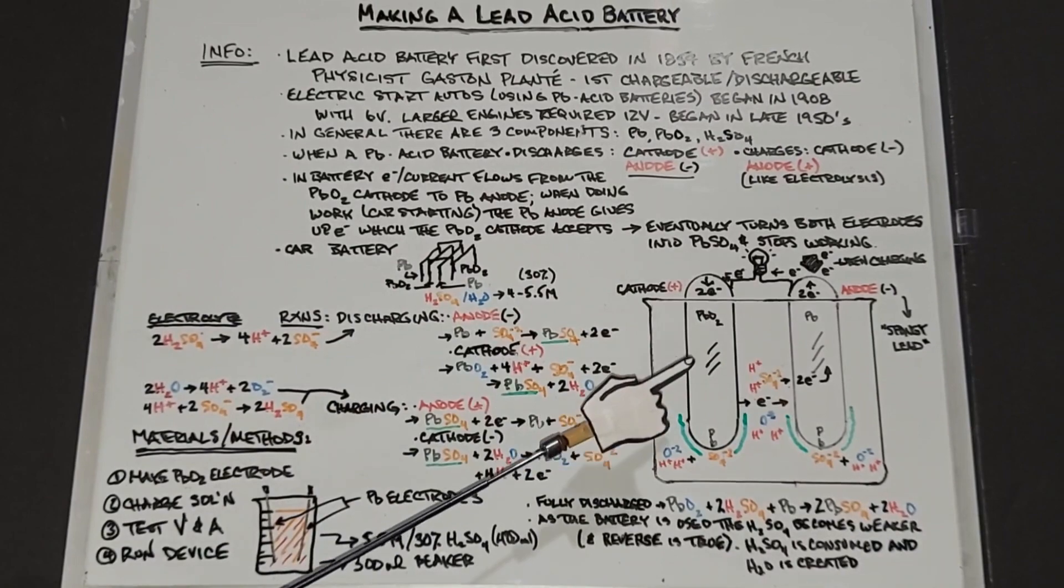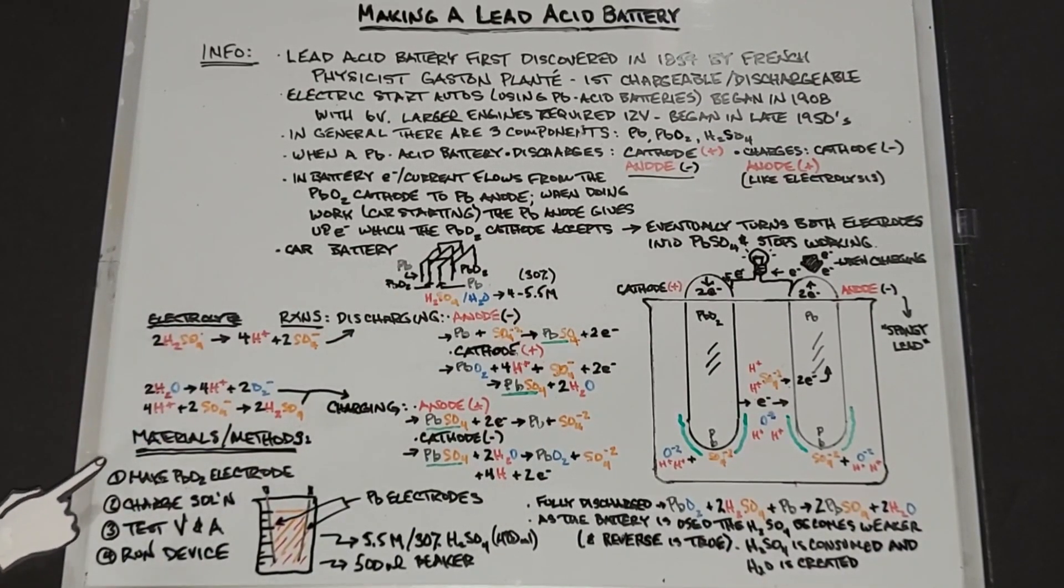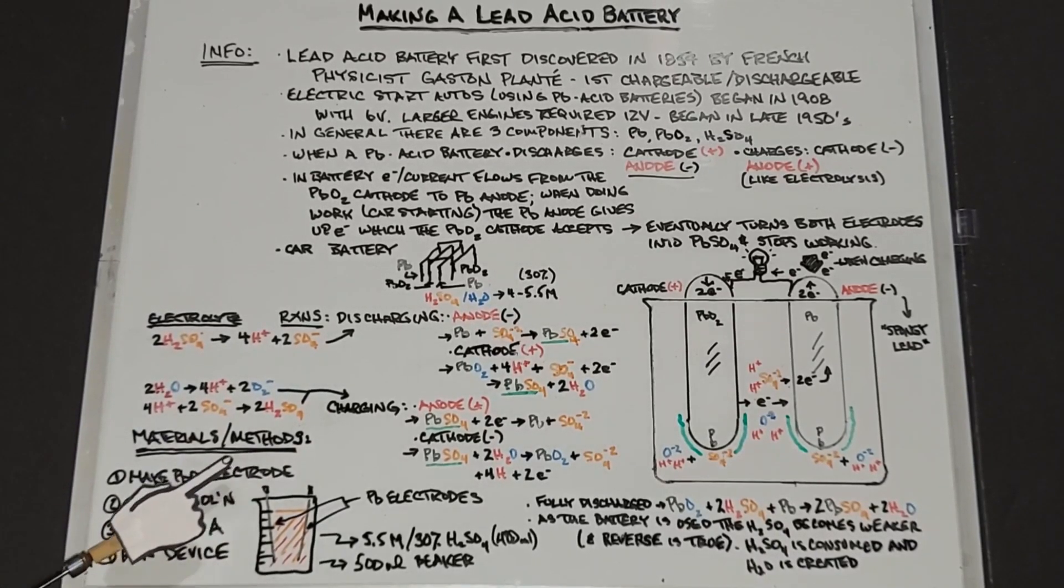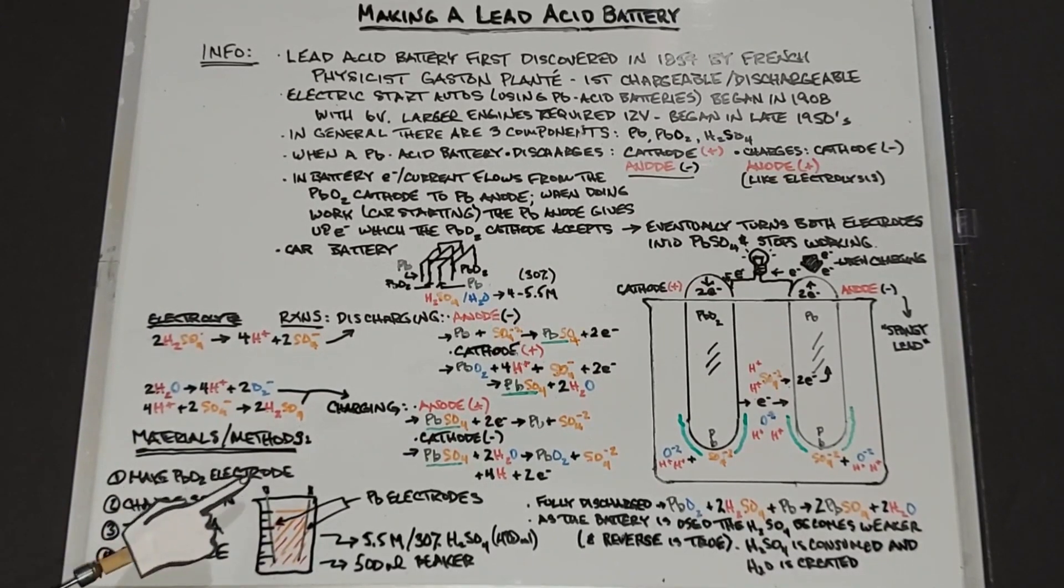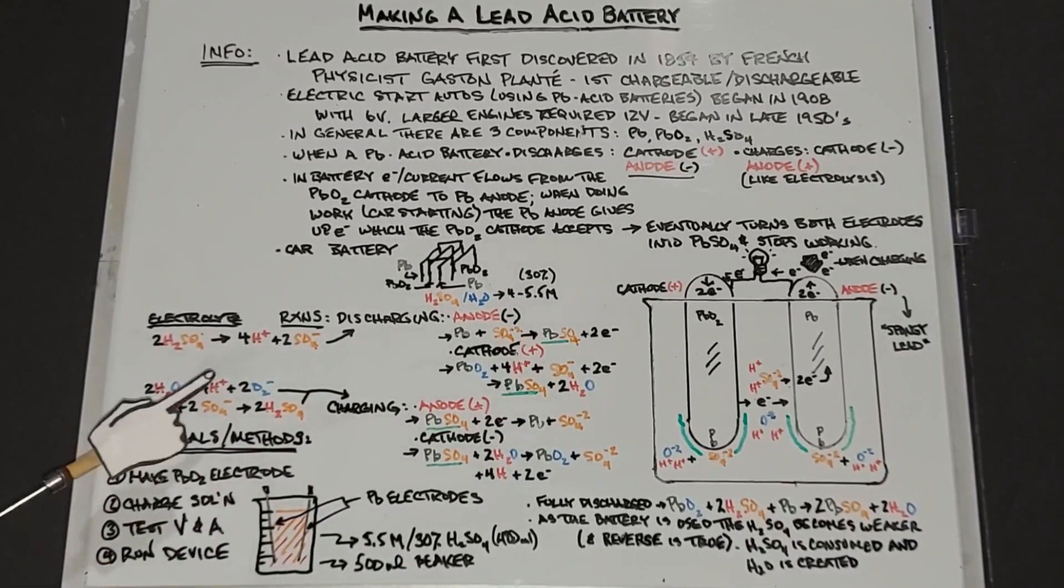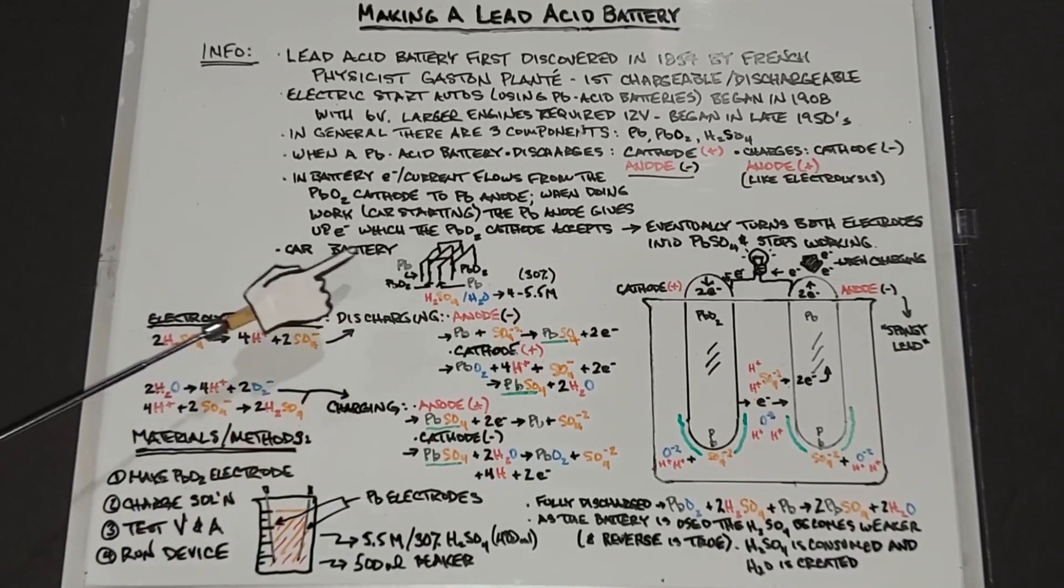As far as what chemistry is happening inside of a lead acid battery, the actual experiment is pretty straightforward. First thing I'm going to do is make a lead dioxide electrode, and I can do that easily by taking a lead electrode and then putting in a copper electrode. You will eventually form the lead into lead dioxide if you let this run in some sulfuric acid for a little bit.